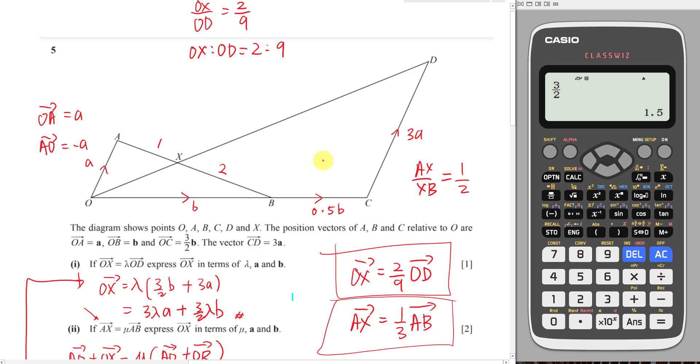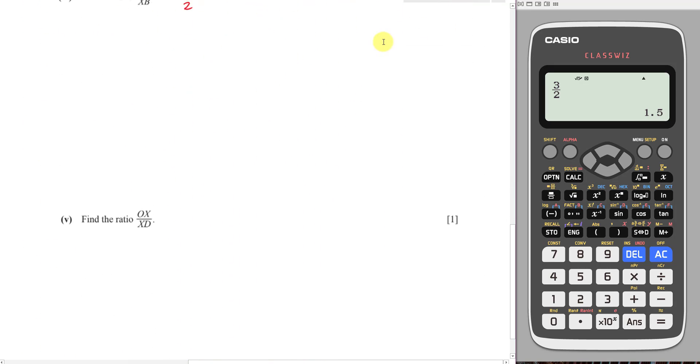O to X here is ratio 2, O to D is ratio 9. 9 minus 2 here will be 7. Because the question asked me to do what? OX over XD. OX will be 2, XD will be 7. So the answer will be 2 over 7. Then we just insert the value, it's just one mark. This one should be 2 over 7.